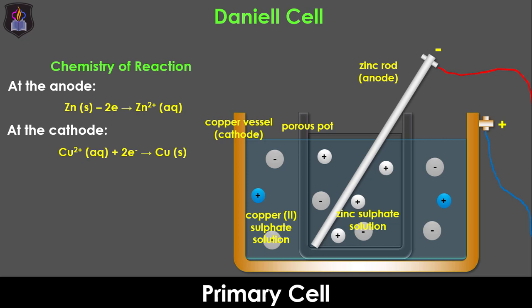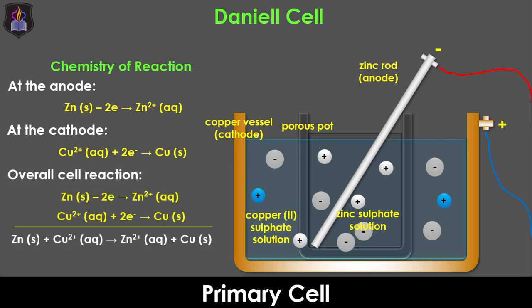Meanwhile in the solutions, the zinc, copper 2 and potassium cations move towards the cathode while the sulfate and chloride anions move towards the anode through the porous partition in order to maintain electrical neutrality of the cell. A fully operational Daniel cell has a cell potential of about 1.1 volts. The cell stops working when the zinc anode stops losing electrons to the copper 2 ions. This would possibly occur when all the zinc atoms in the electrode have been converted to zinc ions.